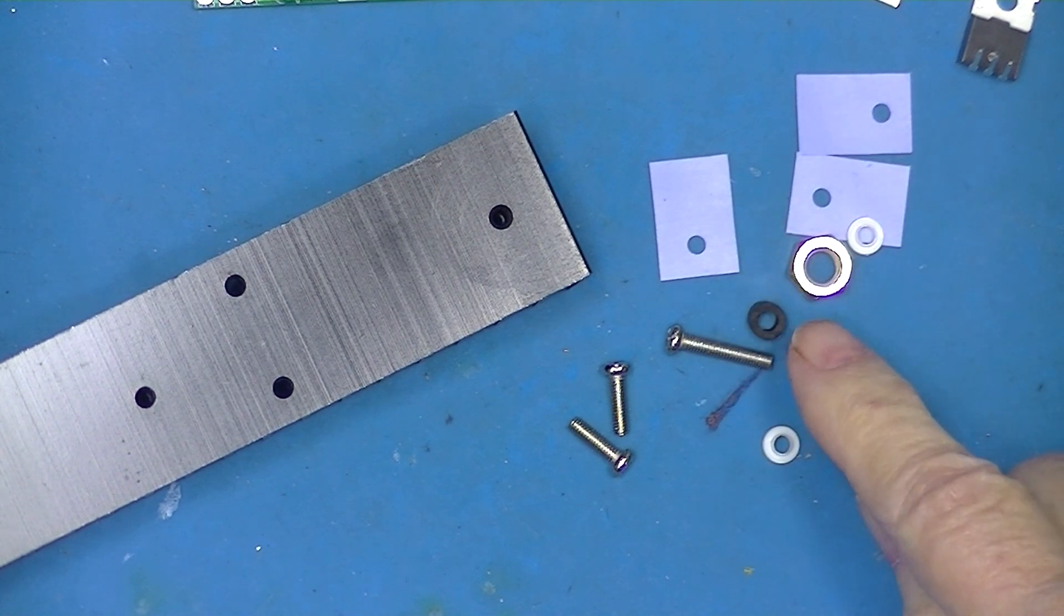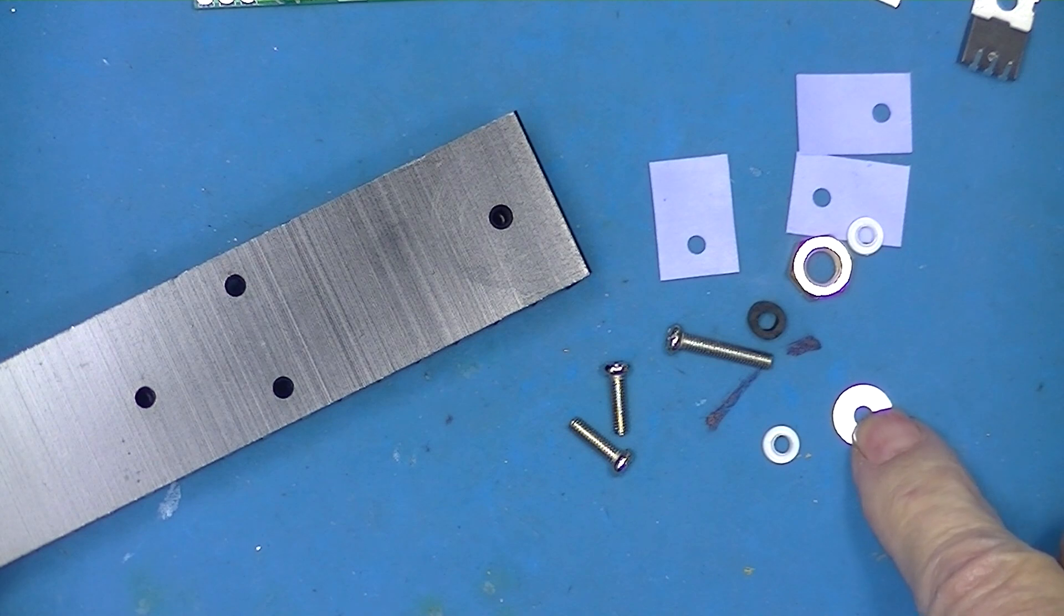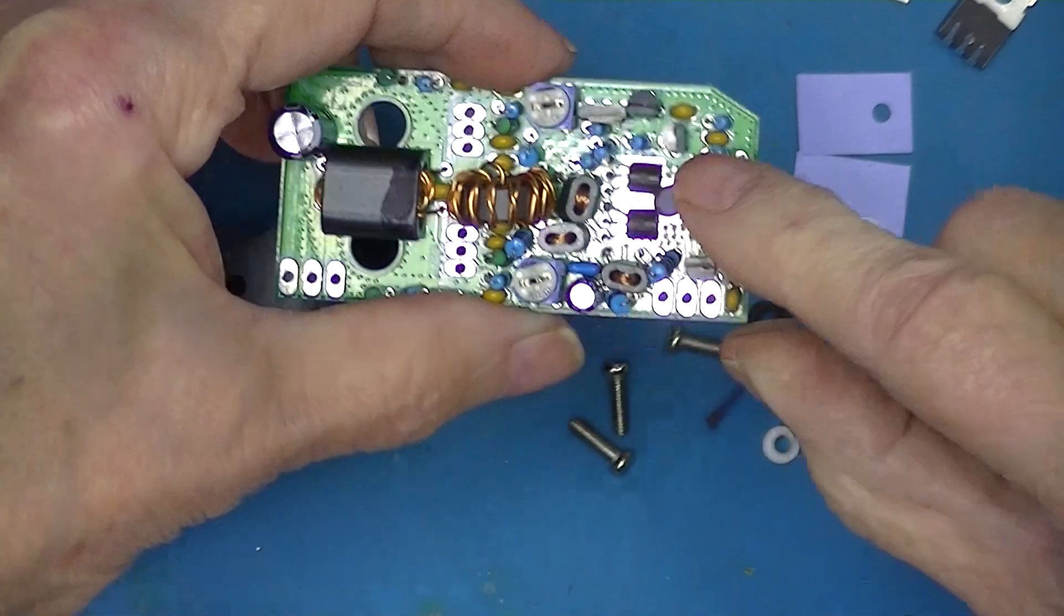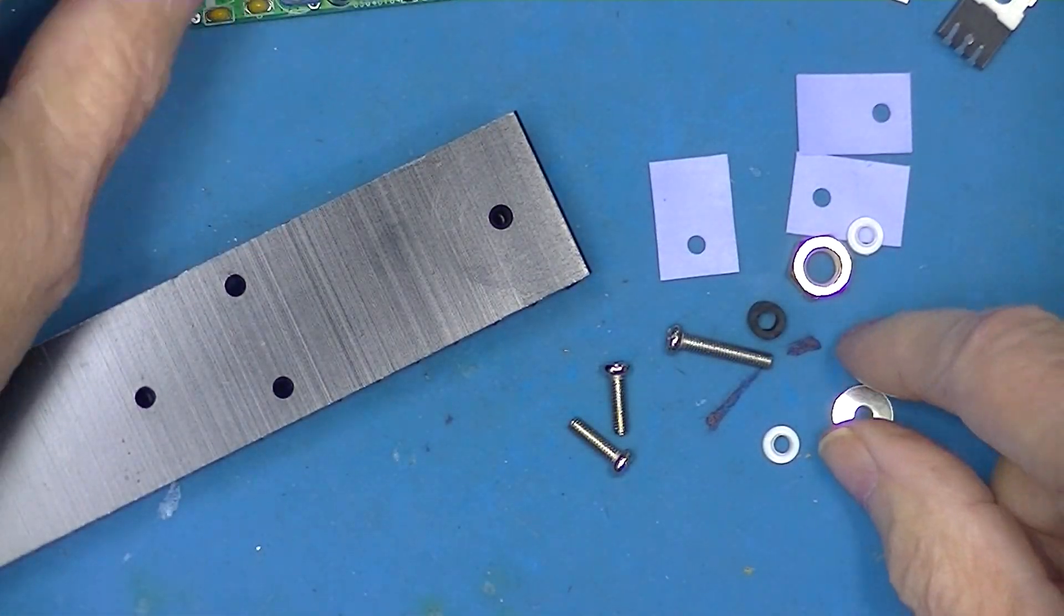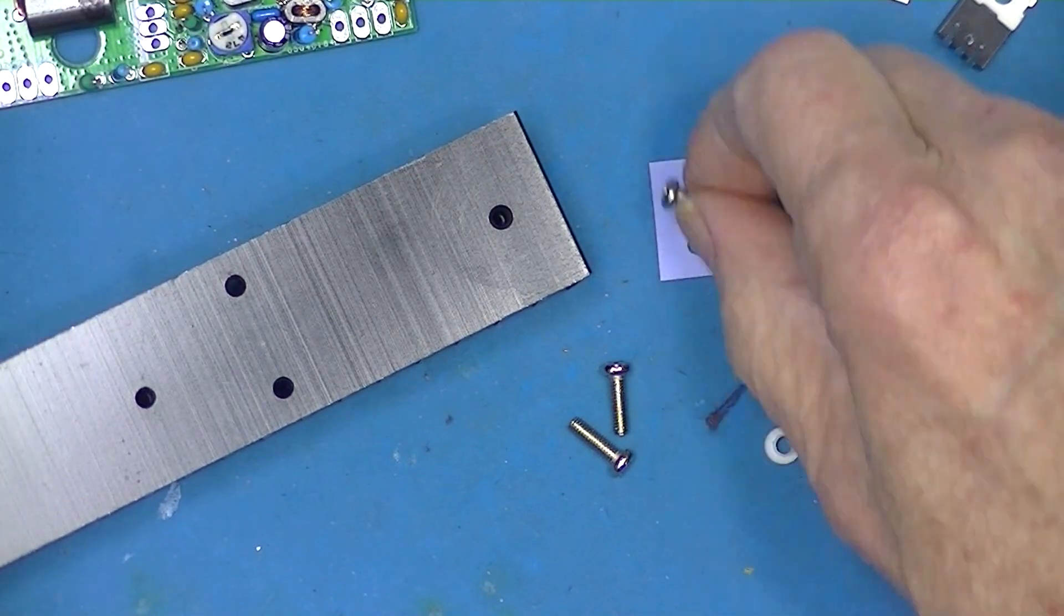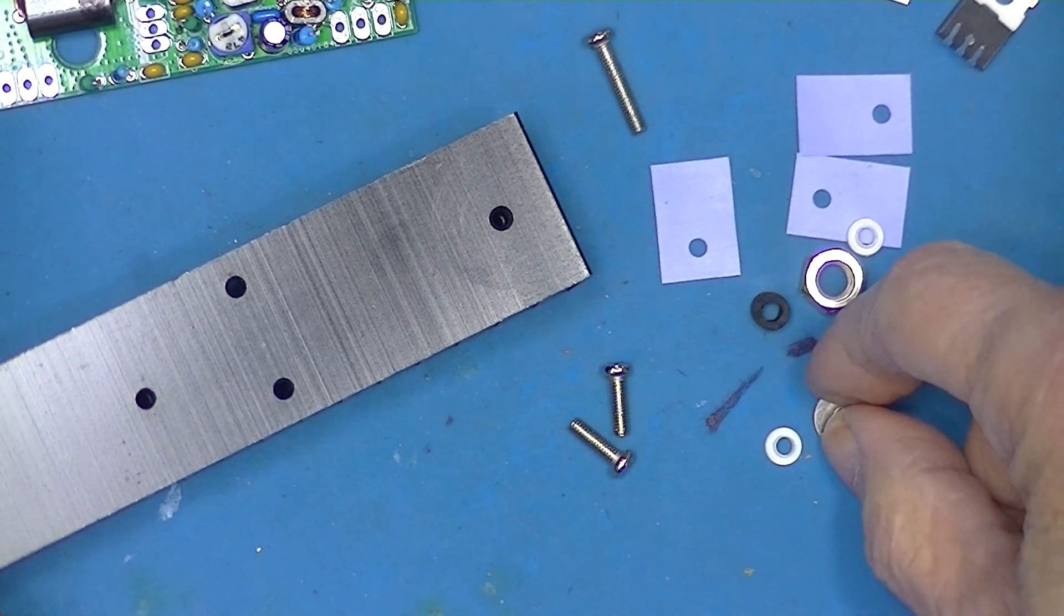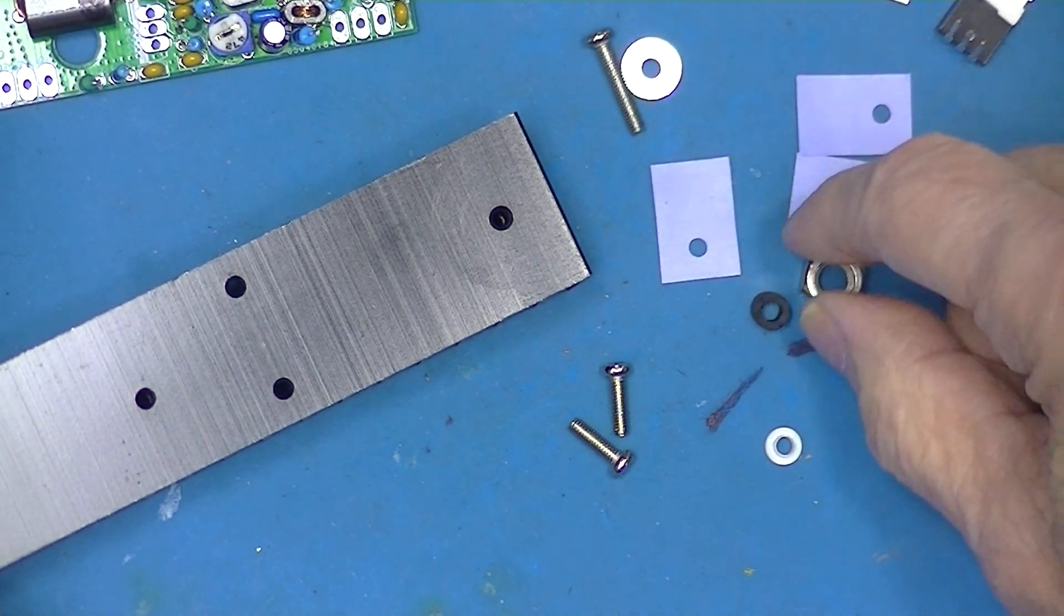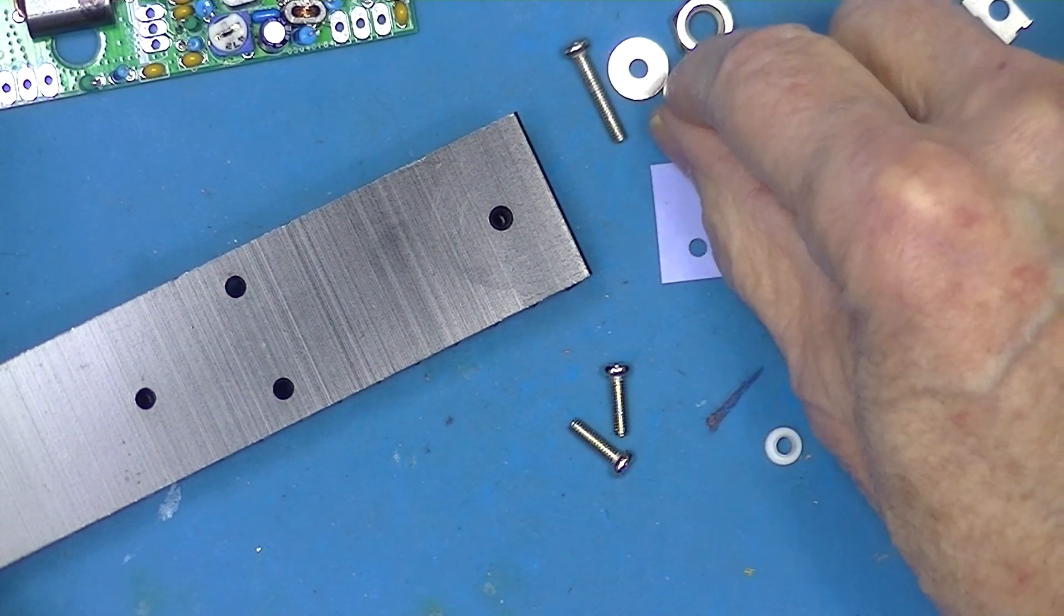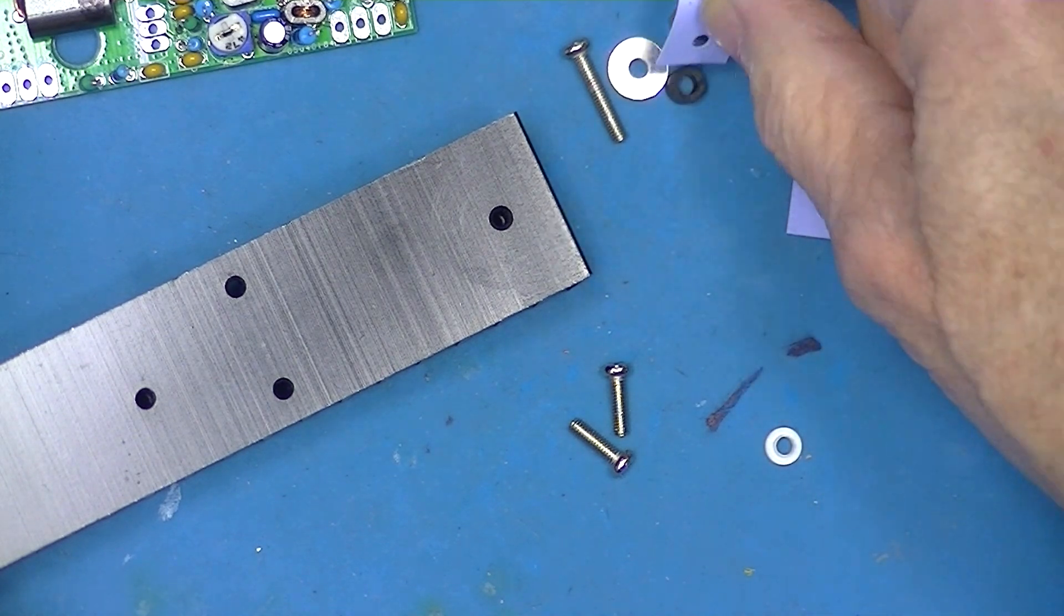The kit includes some hardware. You've already seen me use this washer on top of these MOSFETs. So for anchoring these MOSFETs, we'll set aside this long screw, the washer, a nut, and a little spacer, and one of these silicone pads.